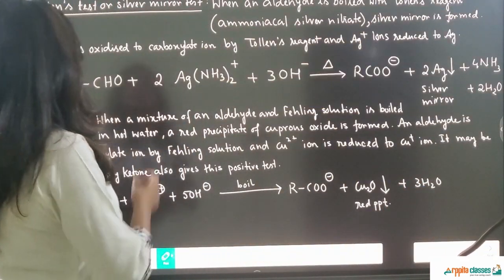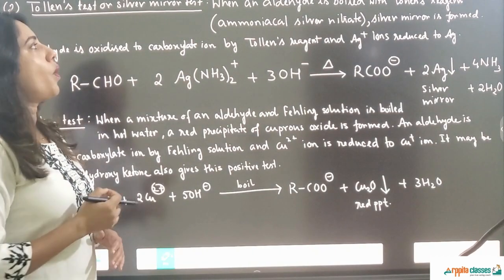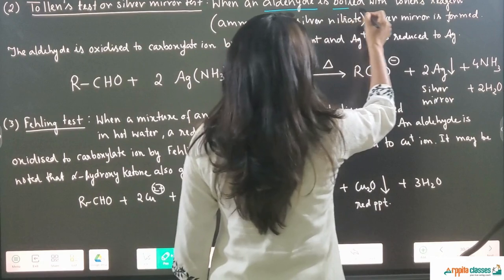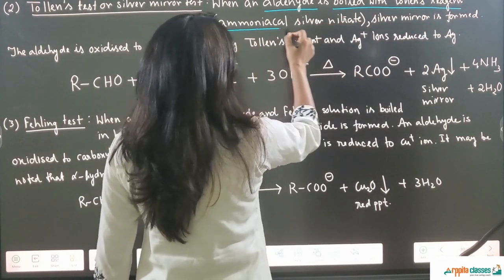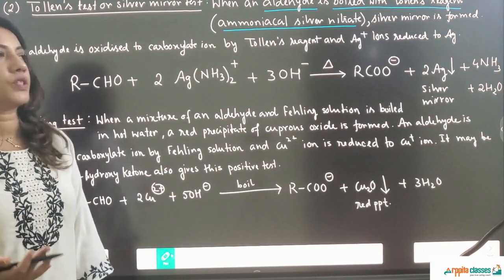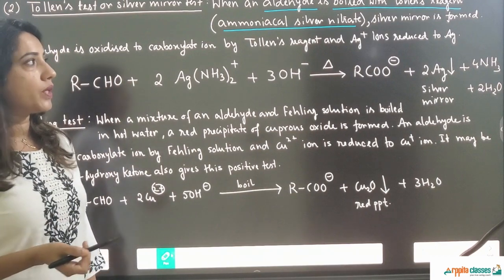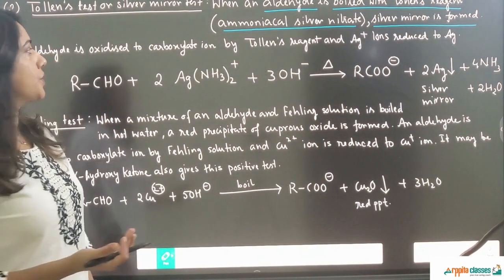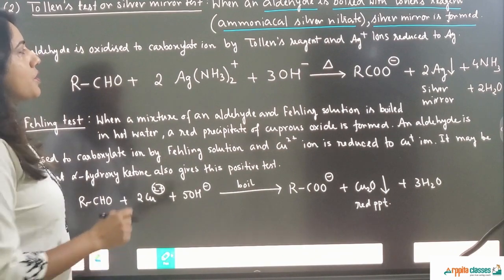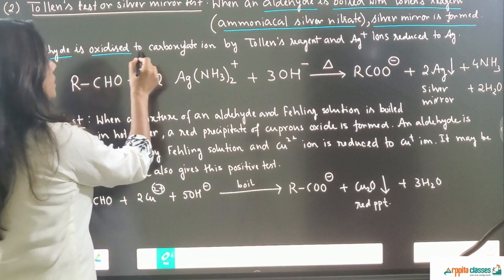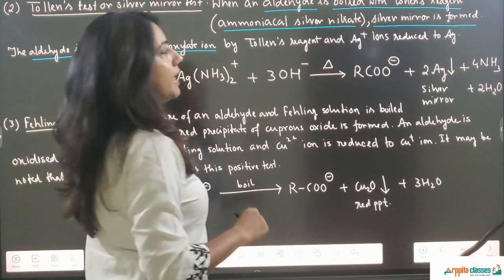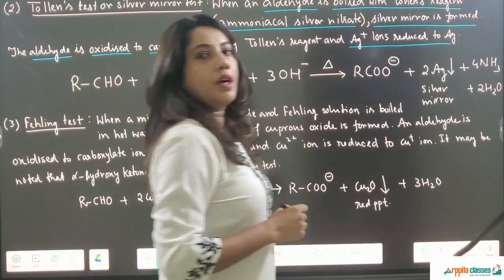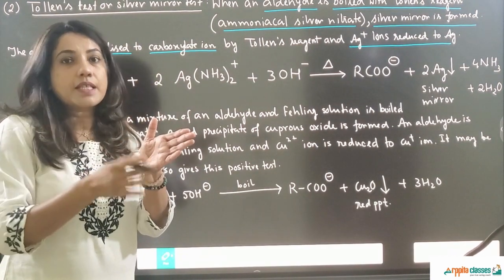The second test for aldehydes is Tollen's test, also called the silver mirror test. This is a very important test. When an aldehyde is boiled with Tollen's reagent — which is ammoniacal silver nitrate solution — a silver mirror is formed on the sides of the test tube. The aldehyde is oxidized to a carboxylate ion, and Ag⁺ ions are reduced to Ag metal, producing the silver mirror.